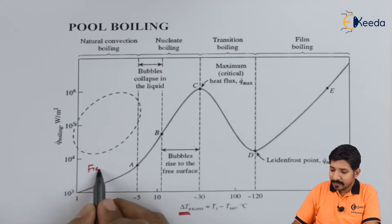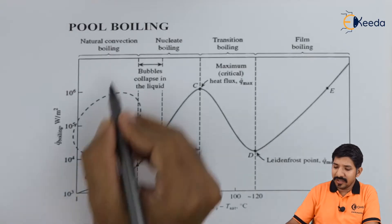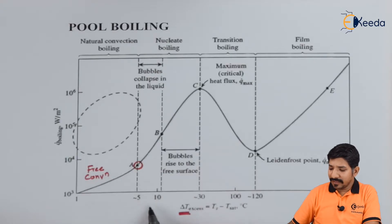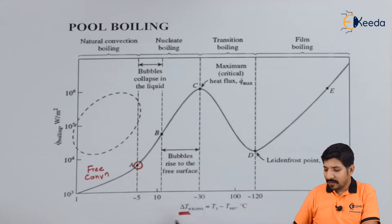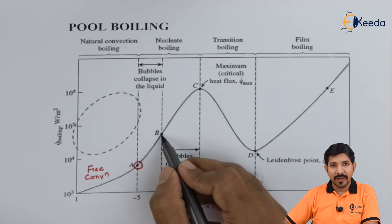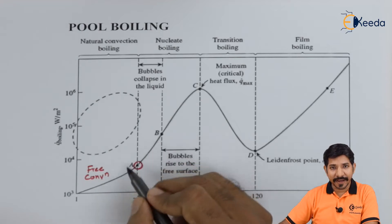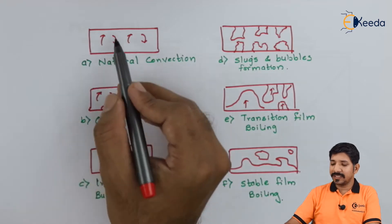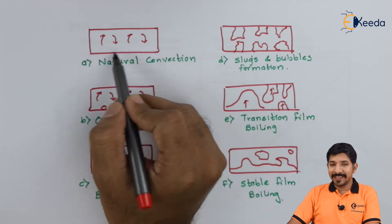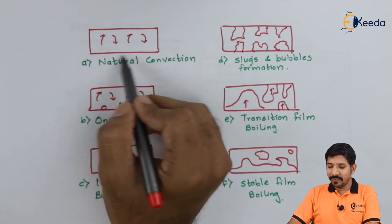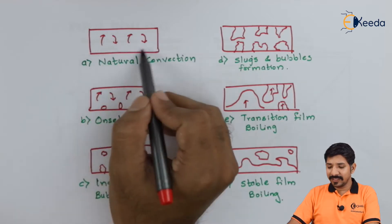This region is free convection or natural convection. At point A, as they reach ΔT of about 5 degrees Celsius, bubbles will start forming — the first bubble forms at approximately 5 degrees Celsius ΔT. This is where hot fluid moves upward because of the change in density and colder fluid goes downward. Till 5 degrees Celsius, natural convection takes place.